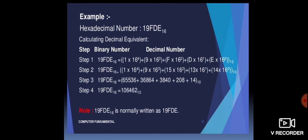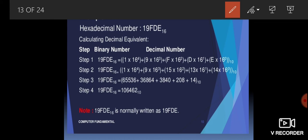For conversion, see the hexadecimal number 19FDE with base 16. To convert hexadecimal to decimal, write down each digit and its position. Starting from the right: 1 × 16⁴ plus 9 × 16³ plus F × 16² plus D × 16¹ plus E × 16⁰. The values of the letters are: F equals 15, D equals 13, and E equals 14.